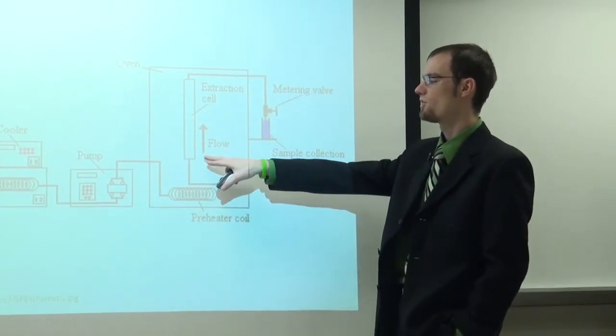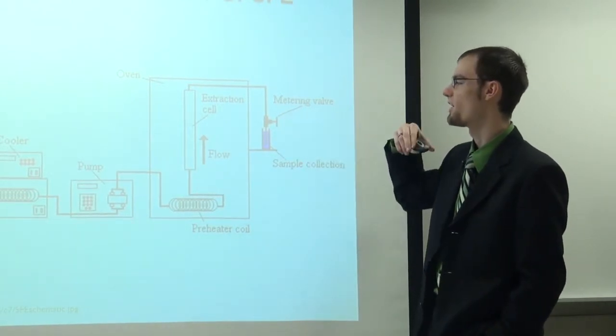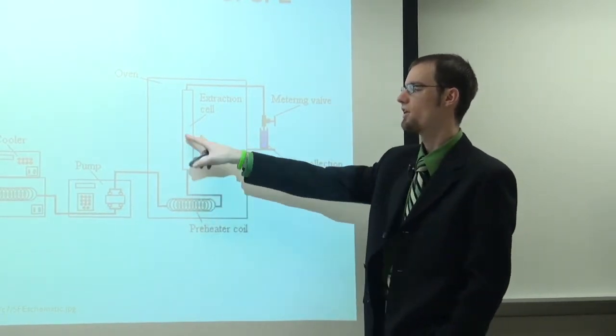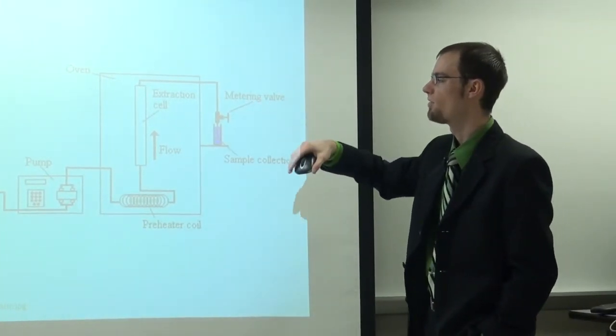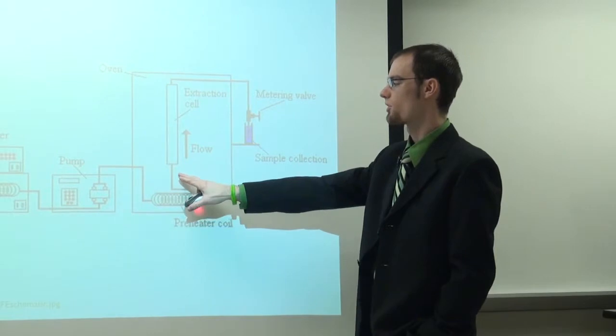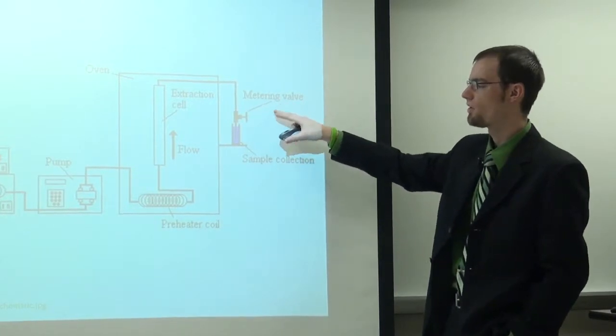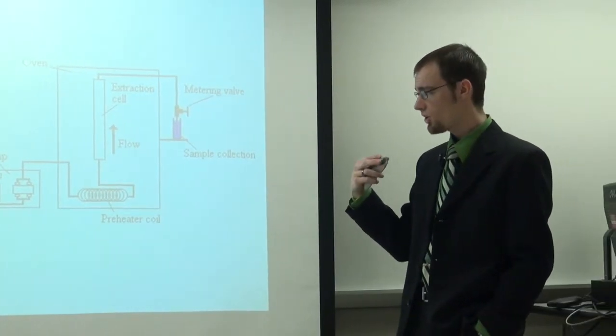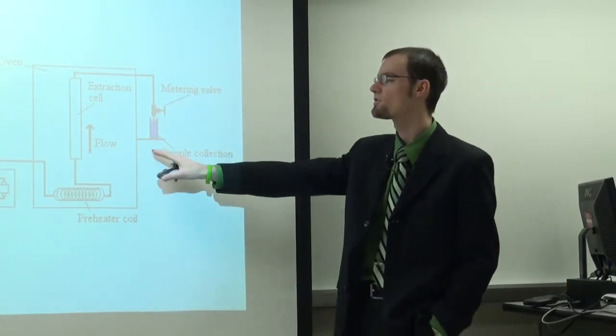There are two different kinds. You can run a dynamic extraction, which is where you have this valve closed. Or, sorry, a static extraction, where you have this valve closed, and you just run your CO2, your supercritical CO2, into your extraction vessel. Really let it penetrate your matrix. And then what you can do is you can open your valve, and you can run what's called a dynamic extraction, which is where you let your supercritical CO2 flow through it. And then at this metering valve, there's, it's two valves actually, we'll talk about that in a second. But you collect your sample, and then you just, you release the pressure, and it allows your CO2 to just dissipate. And you're left with just your analyte.